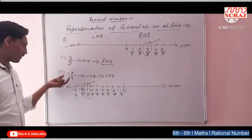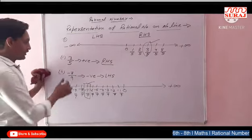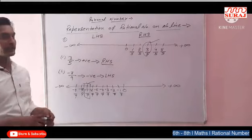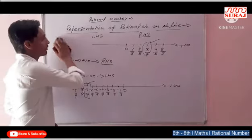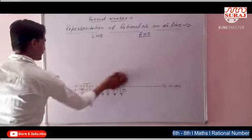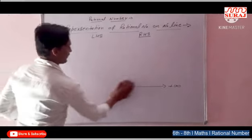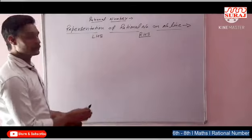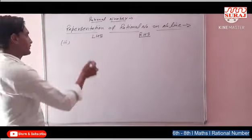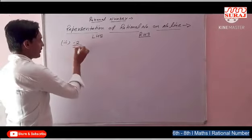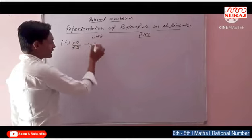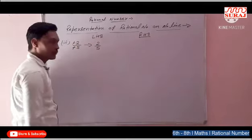Ab dekhte hain — numerator aur denominator dono negative sign ke saath. Phir hum present karayenge — denominator negative sign ke saath. Third jo question aata hai woh hai numerator aur denominator dono negative sign ke saath — for example minus 2 upon minus 5. Agar hamne solution karliya to minus aur minus cancel hoga, yeh number ho gaya 2 upon 5.